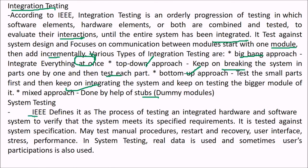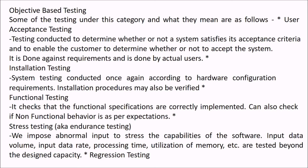System testing, as defined by IEEE, is the process of testing an integrated hardware and software system to verify that it meets its specified requirements; it is tested against the system specification. Many aspects may be tested including manual procedures, restart and recovery, user interfaces, stress, and performance — real data is used and sometimes user participation is encouraged. User acceptance testing determines whether a system is suitable, whether it satisfies acceptance criteria, and enables the customer to determine whether the system is acceptable. If not accepted, the system may be rejected; it is done against the requirements by actual users.